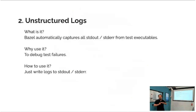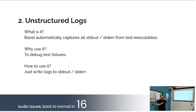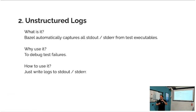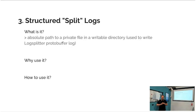The second feature is unstructured logs. It's very simple: Bazel captures all the standard output and standard error from your test process while it's running. You don't have to do anything — it's completely automatic. You use it when you need to debug a test failure. Just write stuff to stdout or stderr; that's it.